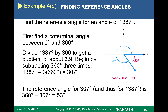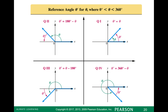Here's a quick reference chart — pause the video and copy this down. If an angle is located in quadrant two, between 90 and 180, you do 180 minus the angle to get the reference angle. If it's between 180 and 270, you take the angle and subtract 180. If it's between 270 and 360, you do 360 minus the angle. This is a great quick reference chart to know which way to do your subtraction.